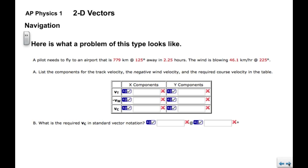Here's a typical problem. A pilot needs to fly to an airport that's a given distance away, a distance at some angle. Again, this is a position vector in 2.25 hours. We're given a wind vector, 46.1 kilometers per hour at 225. We have a table that lists the components for the track velocity, negative wind velocity, and the required course velocity in the table. Again, we know that course equals track plus negative wind, or minus wind.